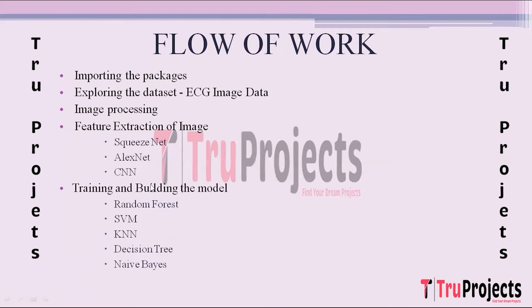The next model built is KNN, that is K-Nearest Neighbor. KNN is an instance-based learning algorithm used for classification and regression. It makes predictions by finding the K-nearest data points in the feature space and determining the majority class among them. KNN is simple to understand and implement, is especially suitable for multi-class problems, and can also handle noisy data effectively.